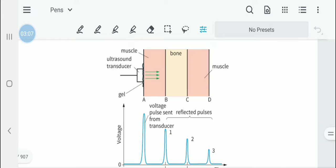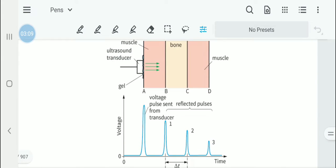Now the time base will tell us how long does it take for each of these reflections to come through. From B, how long does it take for the first pulse to come.